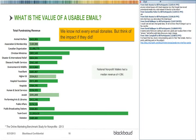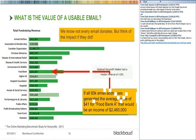We know not every email address donates, but think of the impact if they did. The Food Bank vertical values each usable email at $41, but their average online fundraising revenue is around $680,000–$685,000. If everyone responded, you'd be looking at around $2 million — the big pie in the sky we're all shooting for. That gives you an idea of the opportunity with each email you capture.